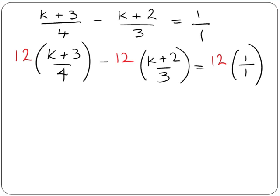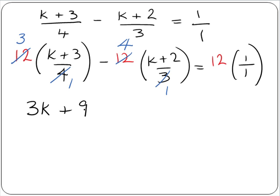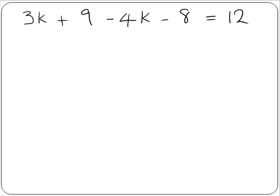Our denominators will divide exactly into our common denominator. So 4 into 4 goes once; 4 into 12 goes 3 times. 3 into 3 goes once; 3 into 12 goes 4 times. And 1 will go into 12 twelve times, so we don't need to do anything there. Now we multiply out our brackets: 3 by k gives us 3k, and 3 by 3 gives us 9. Minus 4 by k gives us minus 4k, and minus 4 by 2 gives us minus 8. And 12 by 1 gives us 12. So we have 3k plus 9 minus 4k minus 8 equals 12. So 3k minus 4k gives us minus 1k, and 9 minus 8 gives us plus 1, equals 12.